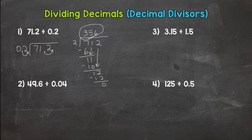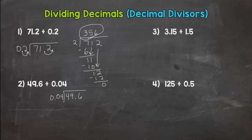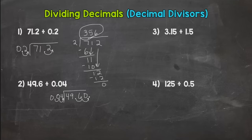Let's go to number two. We have 49 and six tenths divided by four hundredths. Is my divisor whole? No. So I need to make it whole. In this one I need to move the decimal twice, which is the same as multiplying by one hundred. Whatever I do to the outside I need to do to the inside — one, two. There's my decimal — fill with a zero. So rewriting my problem: 4 is my divisor and 4,960 is my dividend.